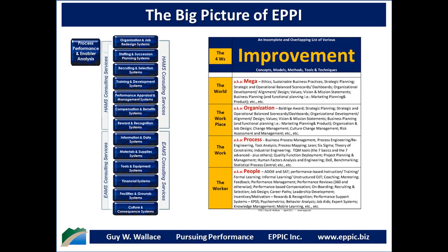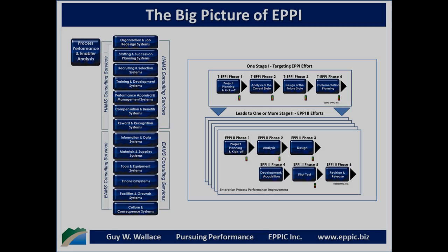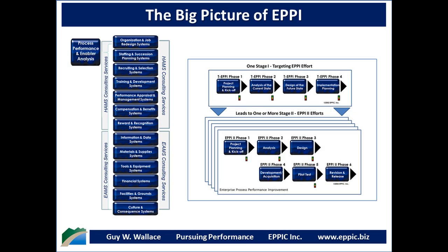When we do improvement, we're looking at usually the worker level at the bottom, the work that they do, the workplace itself, and the world in which it exists. There are many improvement methodologies that can be utilized to attack these four levels. EPI includes Stage 1, the targeting effort itself, and that leads to one or more Stage 2 efforts to actually fix the provisioning systems or the process itself, to improve performance and/or to maintain and sustain performance.